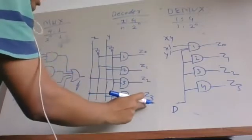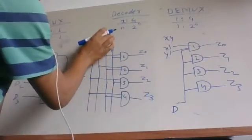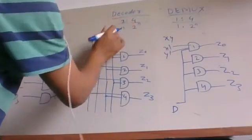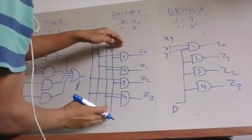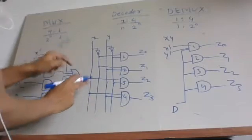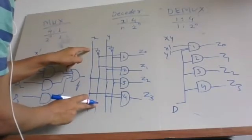The four decoded outputs are the min terms generated by the two inputs. To convert this decoder circuit into a multiplexer, we need additional components.